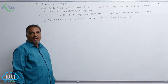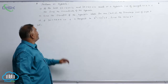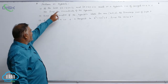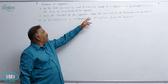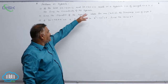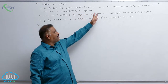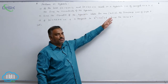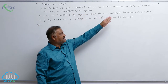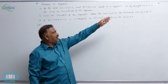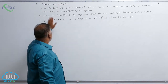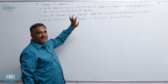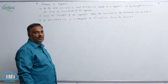We'll discuss problems on hyperbola. If the lines 3x minus 4y equal to 12 and 3x plus 4y equal to 12 meet on a hyperbola S equal to 0, with conjugate axis 6, then find the eccentricity of the hyperbola.